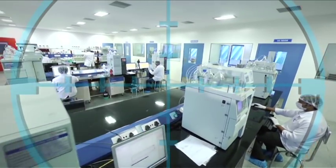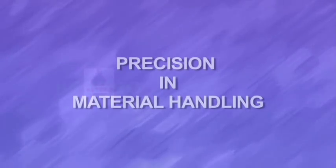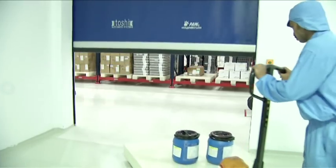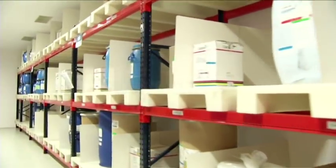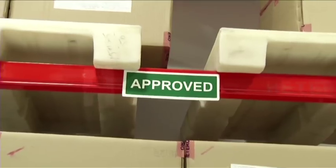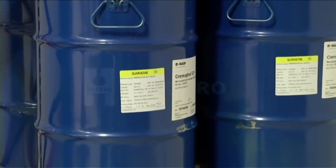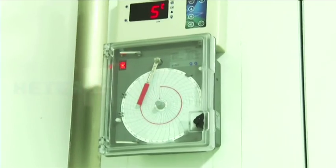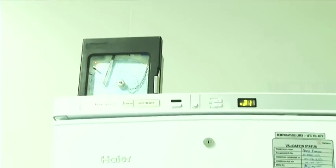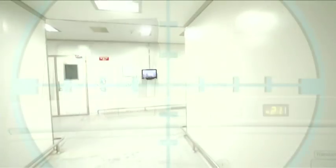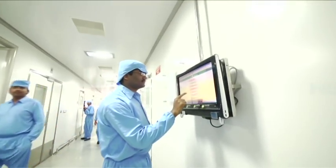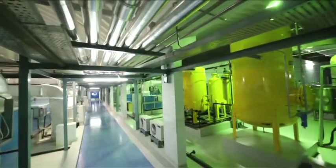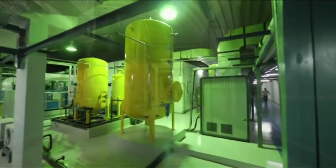Precision begins right from receiving material and classified storage for active drugs, excipients and packaging. The material is stored under controlled temperatures ranging from ambient 25 degrees Celsius, cold storage at 2 to 8 degrees Celsius, or even sub-zero temperatures up to minus 22 degrees Celsius depending on individual substances. Keeping the conditions perfect is the integrated building management system from the reputed Honeywell Corporation USA.